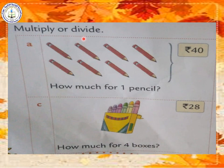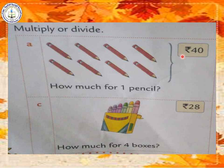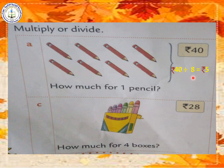Now we have to find out whether to multiply or divide. First question: there are 8 pencils and the total cost is rupees 40. We have to find the cost of 1 pencil. The total is given and we need to find only 1 — so we divide. Rupees 40 divided by 8. The answer is 5. 8 fives are 40. So the cost of 1 pencil is rupees 5.